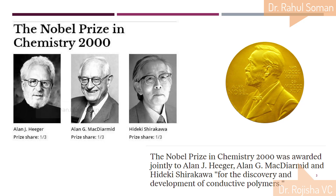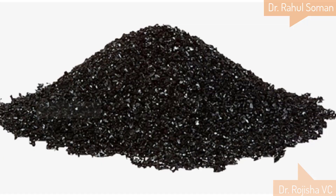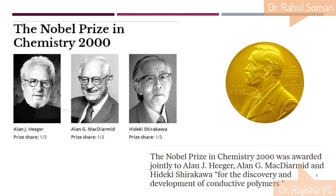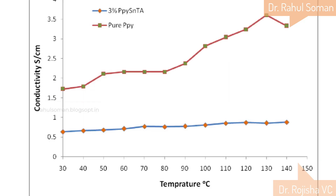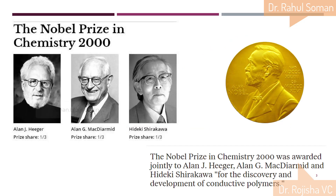It was actually an accidental discovery. He found some polymeric material which was very shiny in nature with a metallic texture. He thought this material could mimic metallic properties, and with that in mind he studied its conductance behavior. He later found that this polymeric material can conduct electricity in a good manner — that is the basis behind the discovery.